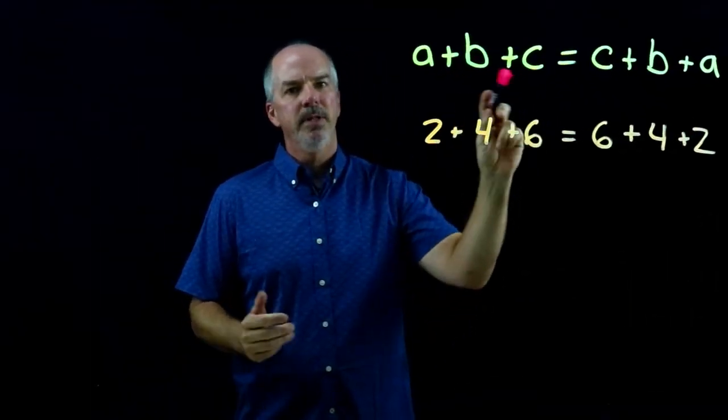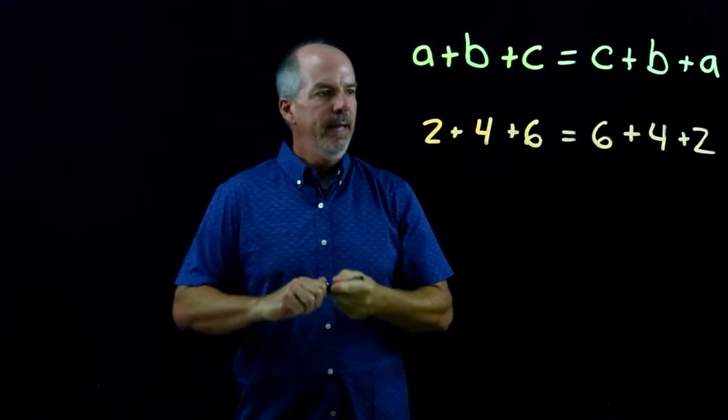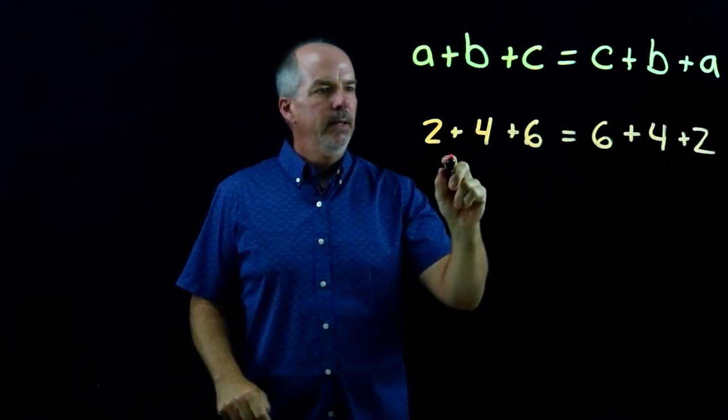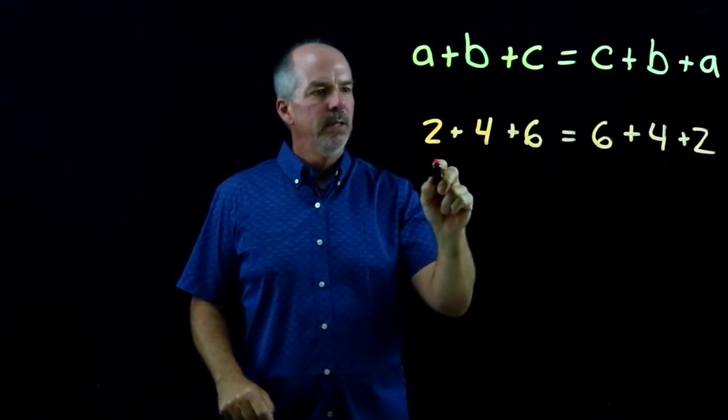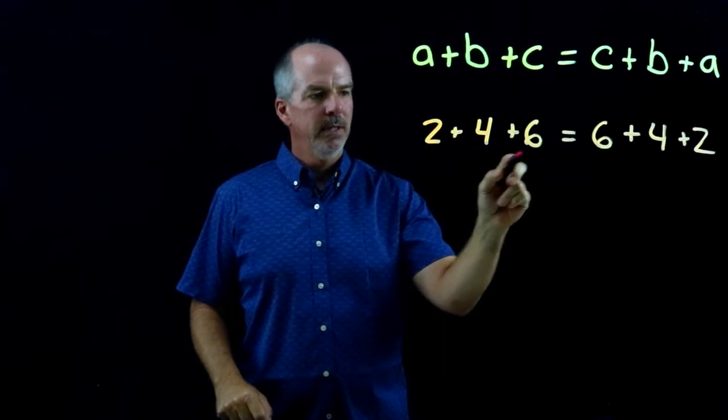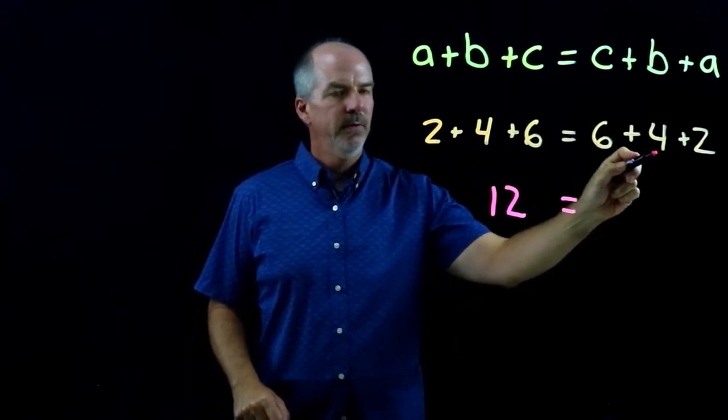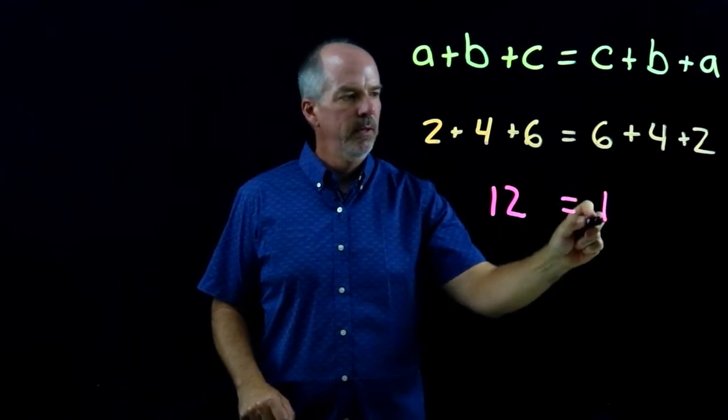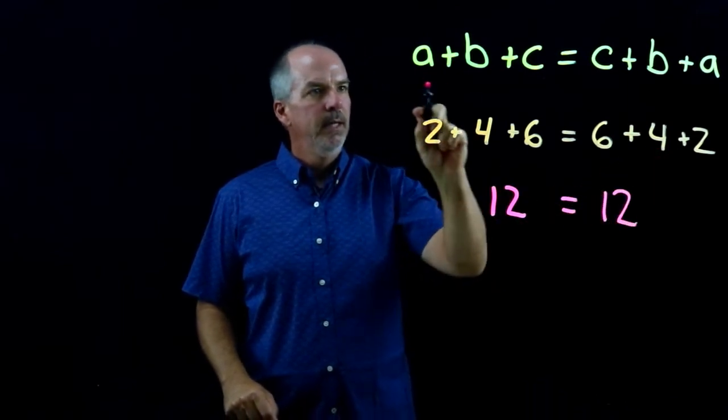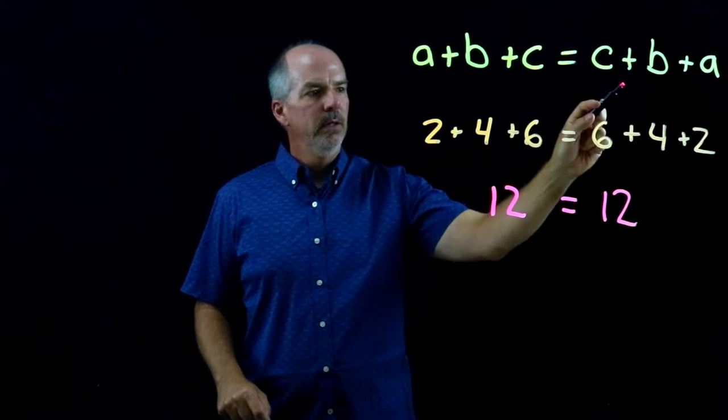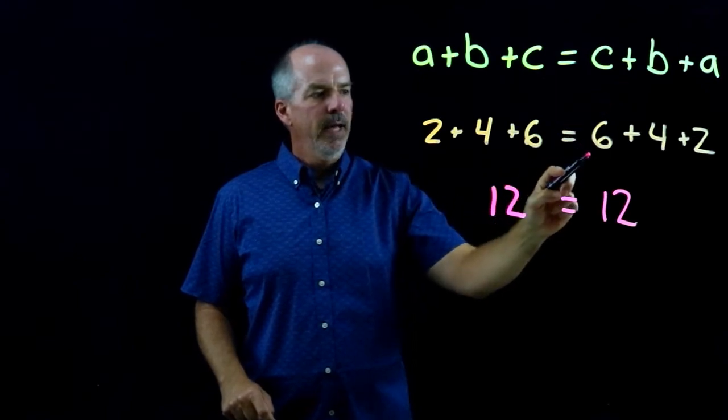We could also have A plus B plus C. We could have three addends. So 2 plus 4 plus 6. 2 plus 4 is 6 plus 6 is 12, and 6 plus 4 is 10 plus 2 is 12. So again, we can change the order of addition without affecting the sum.